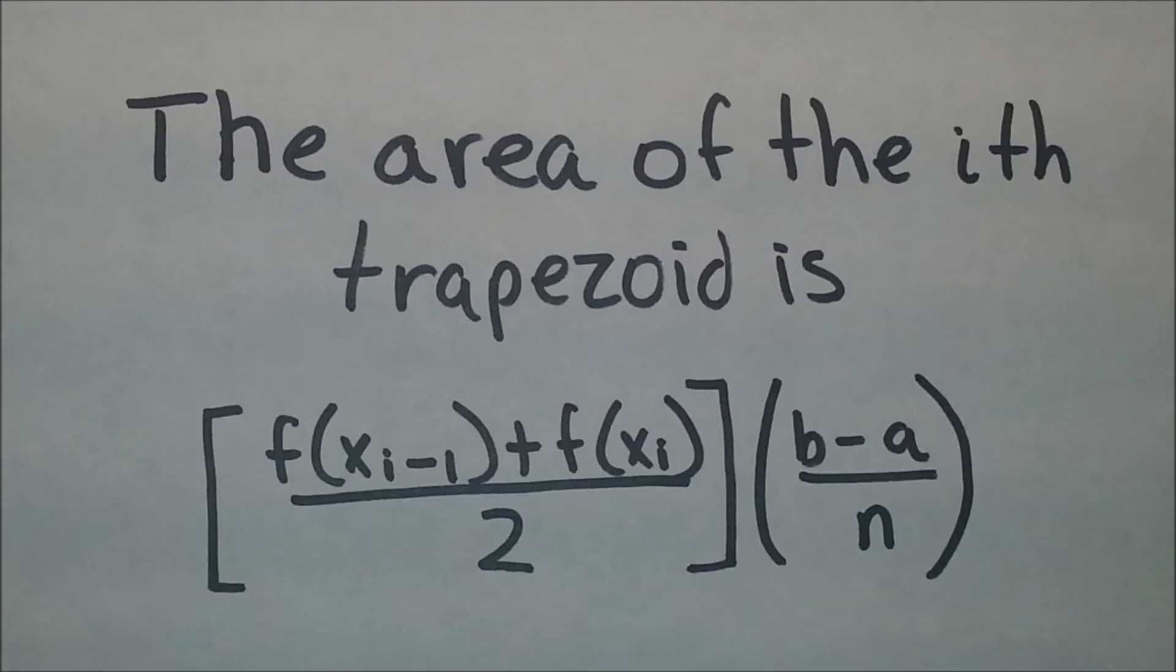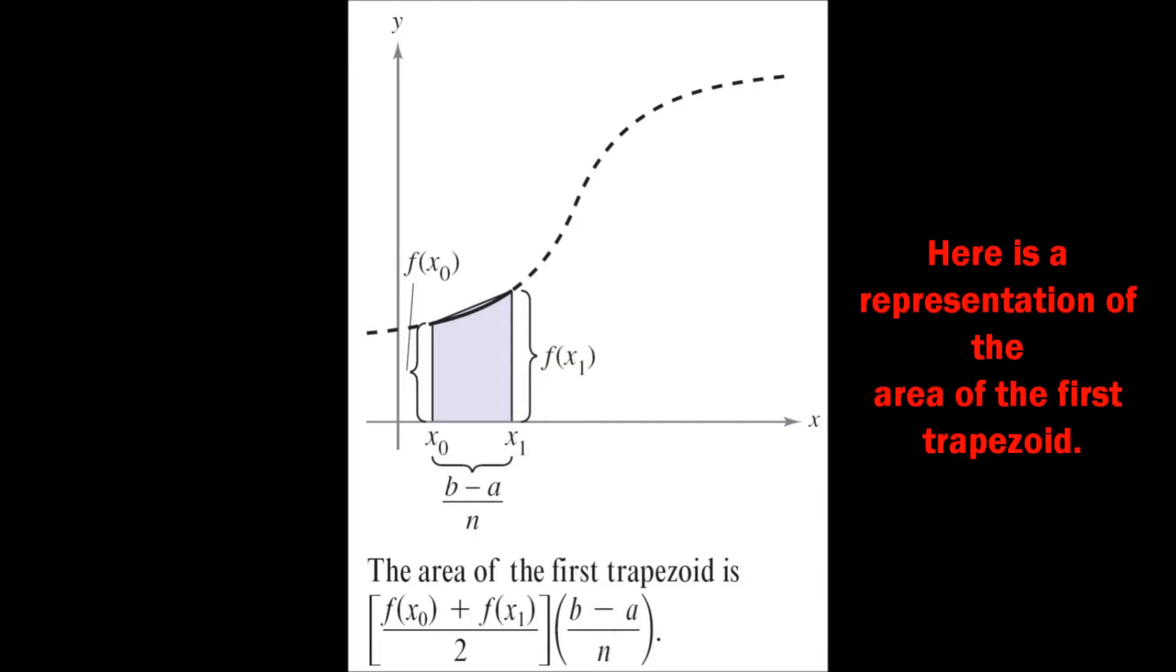The area of the ith trapezoid is [f(x_{i-1}) + f(x_i)]/2 times (b-a)/n. Here is a representation of the area of the first trapezoid.